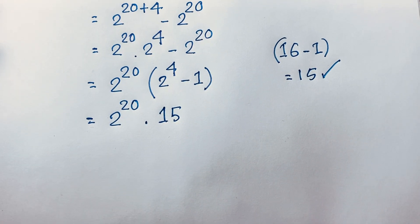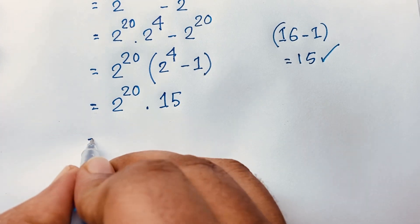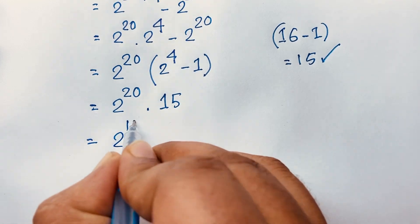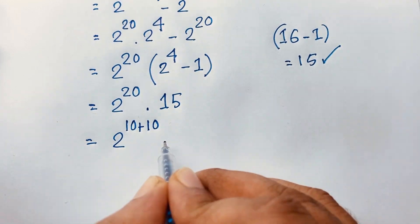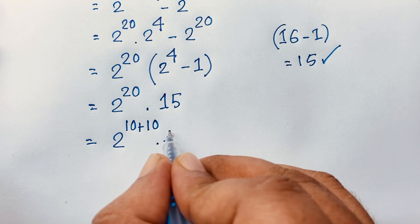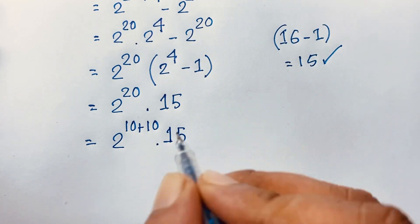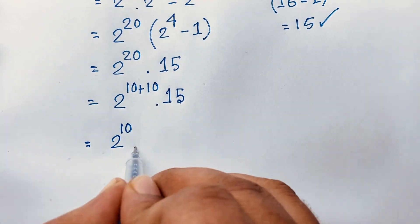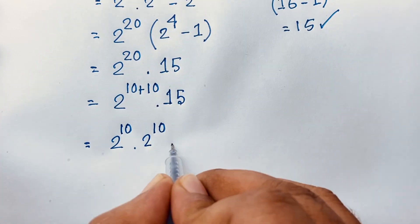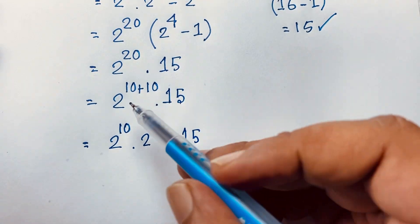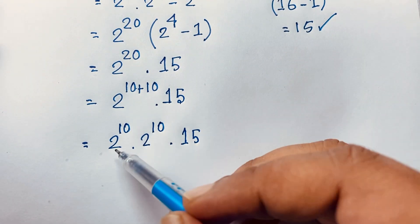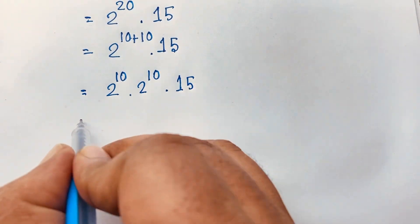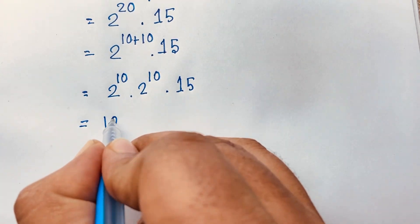Now I rewrite 2 to the power 20 as 2 to the power (10 plus 10), which equals 2 to the power 10 times 2 to the power 10, times 15. Using the same exponential law: a to the power (n plus m) equals a to the power n times a to the power m. Now, 2 to the power 10 equals 1024.